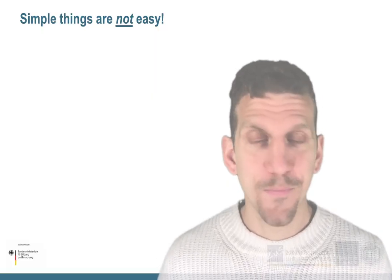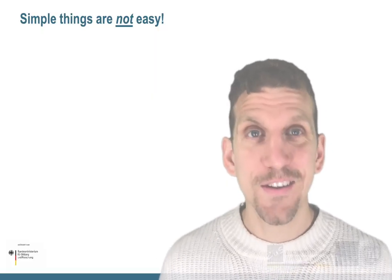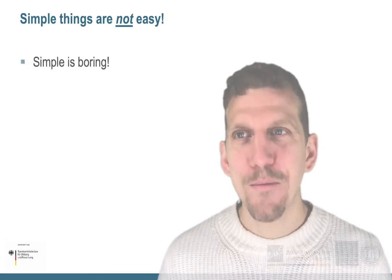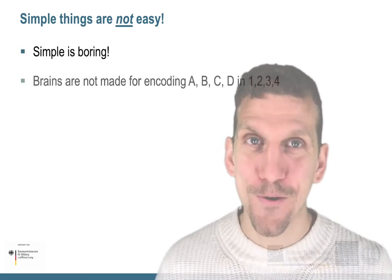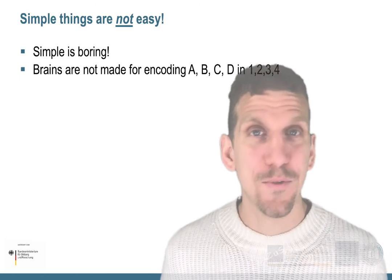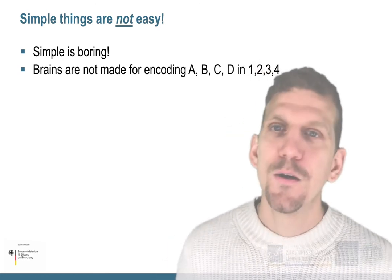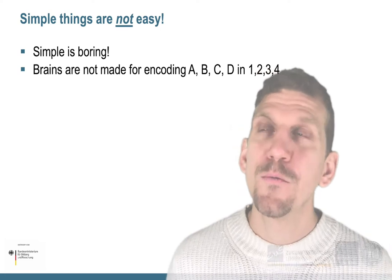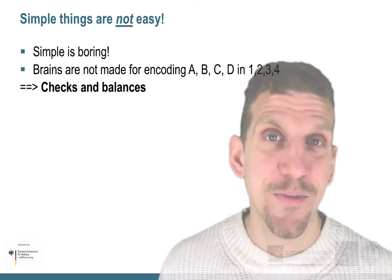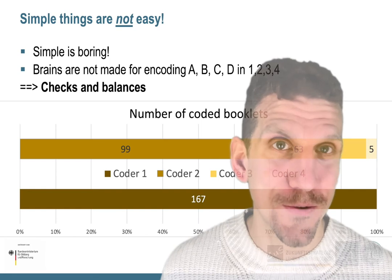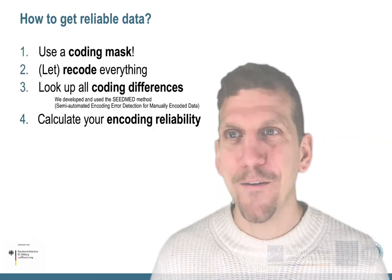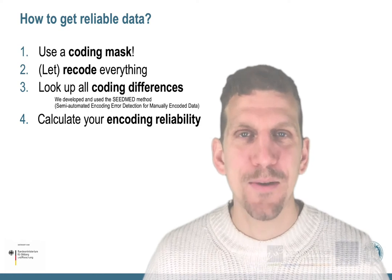Simple things are not easy because simple things are boring. Our brain is just not made for encoding A, B, C, D, 1, 2, 3, 4 a couple of thousand times. So we thought about a very American invention that the allies brought to Germany: the checks and balances principle. How did we get reliable data?